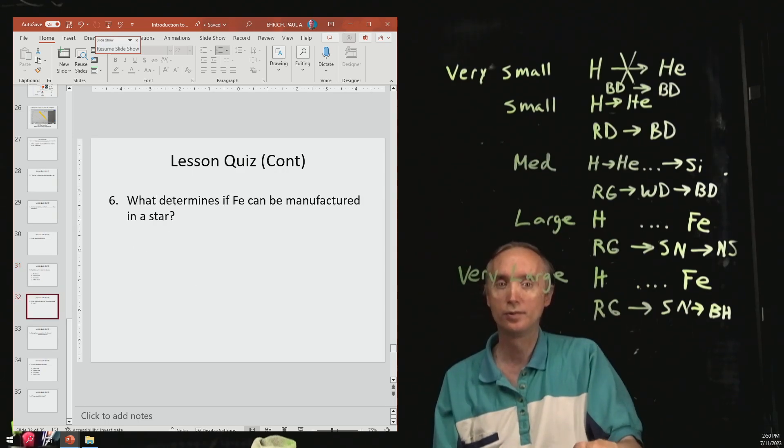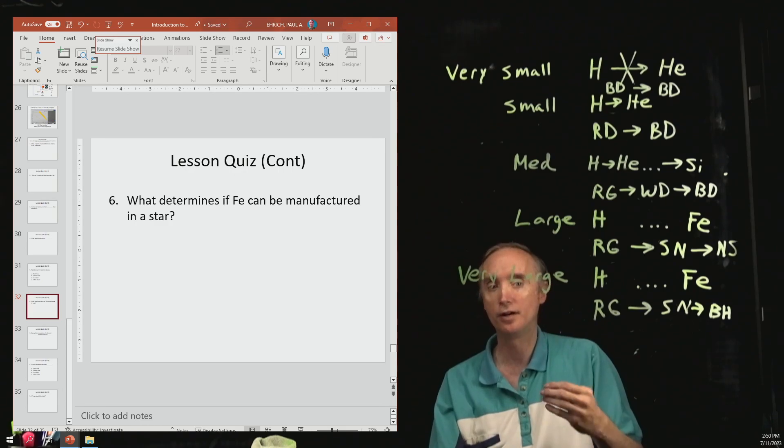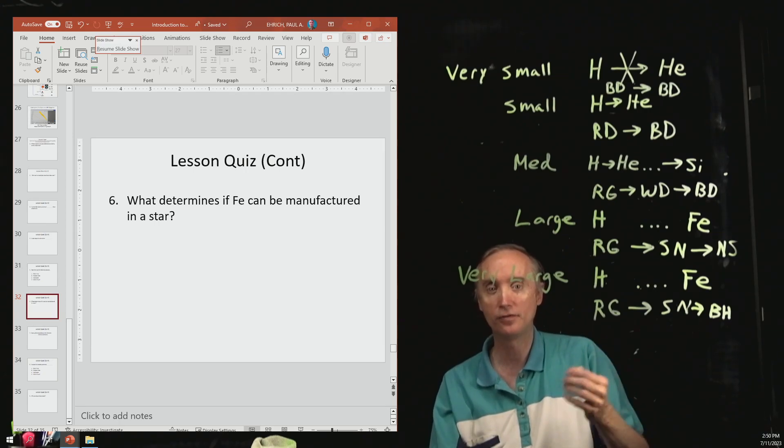What determines if iron can be manufactured in a star? It's going to be its temperature. So, only the very largest stars are going to have enough gravity, enough pressure, enough temperature to be able to manufacture iron.